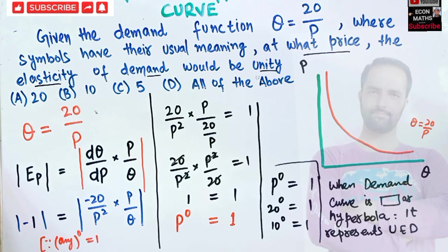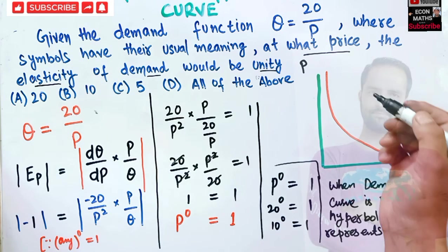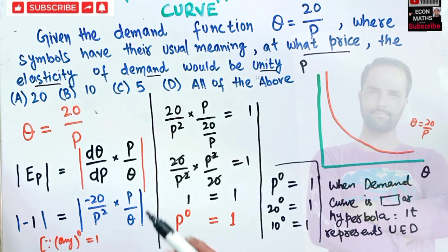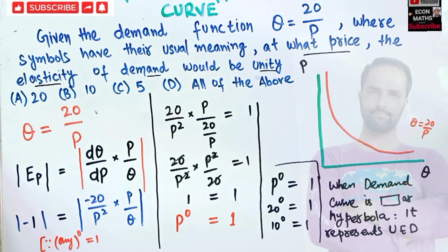So this was one way to find out the answer. You can also use another method: simply take any value of P and compute the price elasticity of demand — you will always get one. The answer is therefore all of the above. I hope I made myself clear in this video. Thank you.